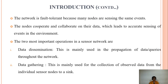The two important operations used in sensor networks are data dissemination and data gathering. Data dissemination is mainly used to propagate data or queries throughout the network. Data gathering is the collection of observed data from individual sensor nodes to a sink.